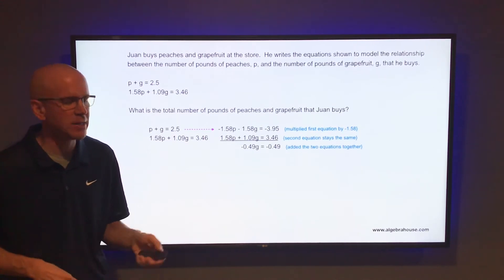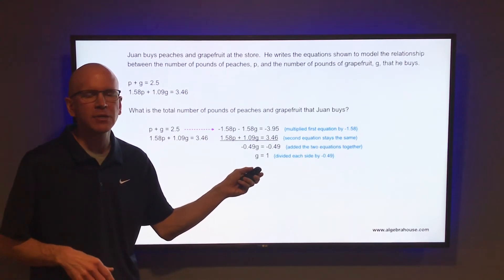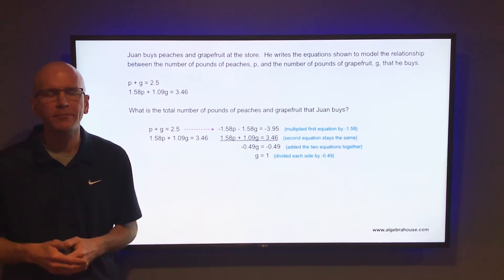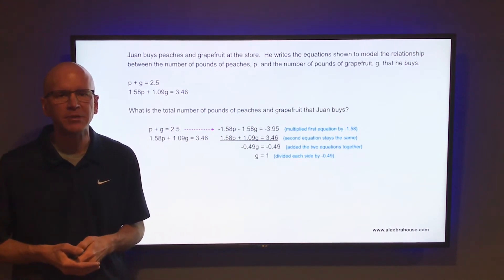To solve that for G, divide each side by negative 0.49, get G equals 1. So Juan bought one pound of grapefruit, but you still need to find out how many pounds of peaches he bought.